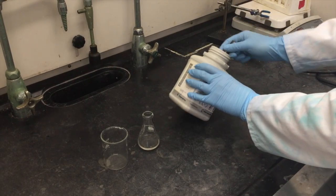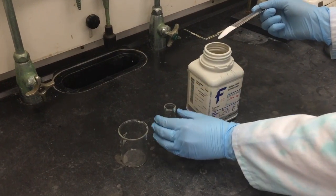Using a spatula, add a mound of sodium sulfate to your organic solvent and swirl the flask.